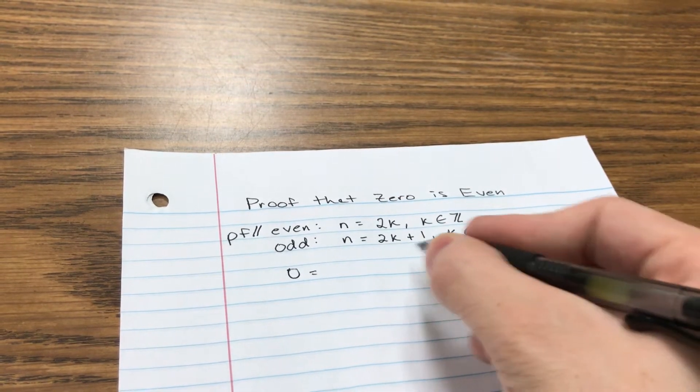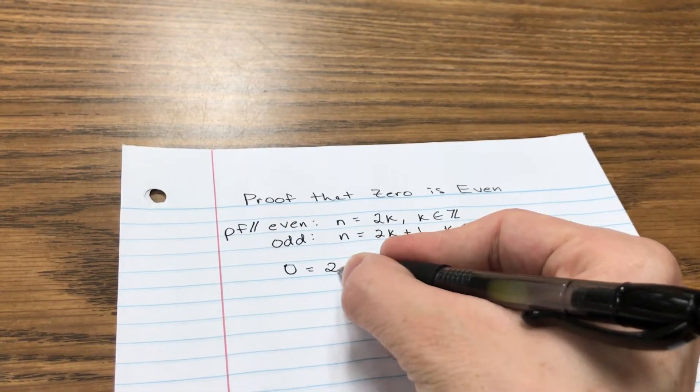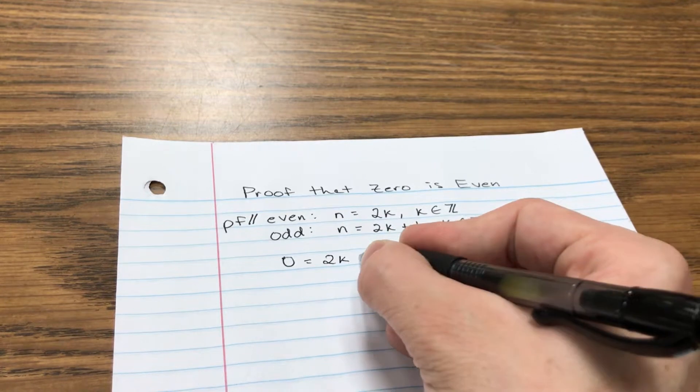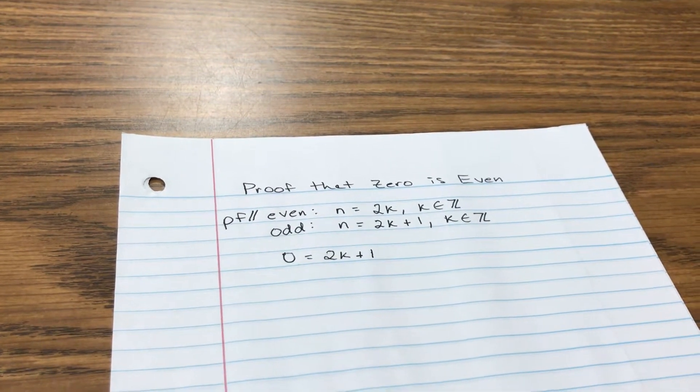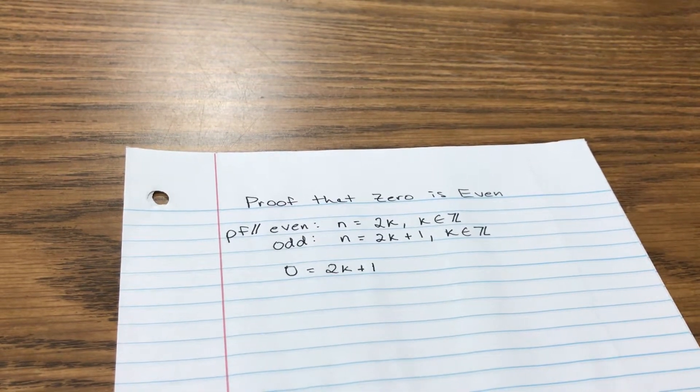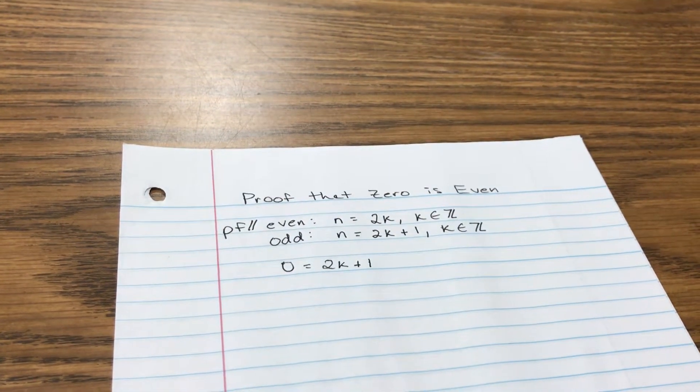So let me go ahead and write that right here: 0 is equal to 2k plus 1. So what does that mean? Well, with a little algebra we can solve this equation for k. I want to get k by itself.